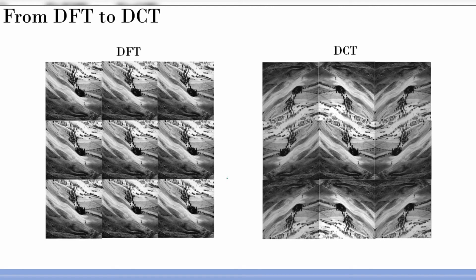Going back to the context of images: DFT assumes the signal is replicated periodically, so those edges create issues and we see vertical and horizontal lines in the FFT. In the case of discrete cosine transform, the assumption is symmetric replication — the image looks like a mirror reflection of itself. This gives smooth, gradual variation at the boundaries, and as a result there are no vertical or horizontal line artifacts in your DCT.